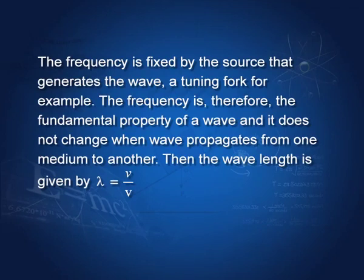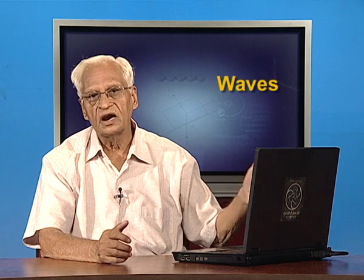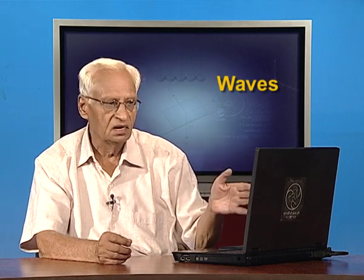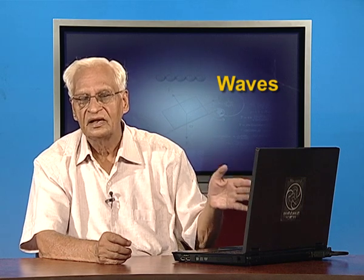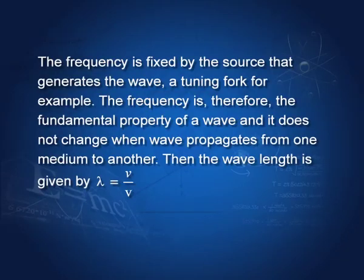The frequency is fixed by the source that generates the wave — for example, a tuning fork — and it does not change when the wave propagates from one medium to another. When a wave enters from air to water, the frequency remains constant while the wavelength and wave velocity change. The three are related by v = λν.